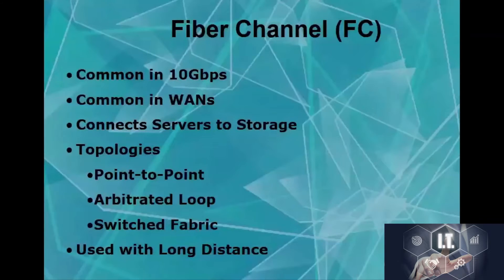Fiber Channel is very widely accepted and used in 10 gig networks. Many networks use fiber between switches and servers, while Ethernet runs from switch to workstation. Fiber is also common in WANs because sending information over large geographic areas is easier using light — Ethernet loses its signal (attenuation) more quickly, whereas fiber maintains signal over longer distances. Fiber connects servers to storage and supports topologies including point-to-point, arbitrated loop, and switched fabric.